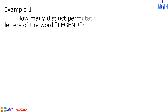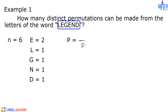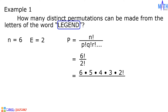Example number 1. How many distinct permutations can be made from the letters of the word legend? The word legend has 6 letters, so the value of n is 6. There are 2 E's, 1 L, 1 G, 1 N, and 1 D. Using the formula n factorial over p factorial times q factorial times r factorial and so on, we have 6 factorial over 2 factorial, which equals 6 times 5 times 4 times 3 times 2 factorial over 2 factorial.